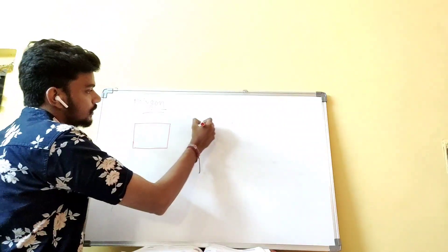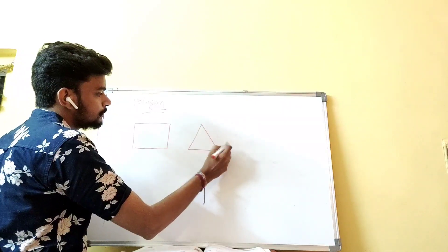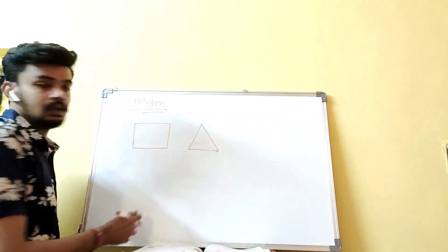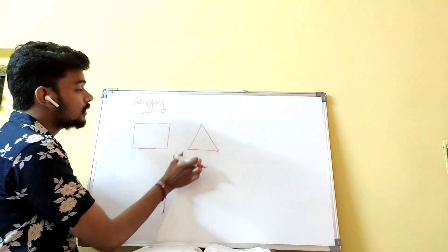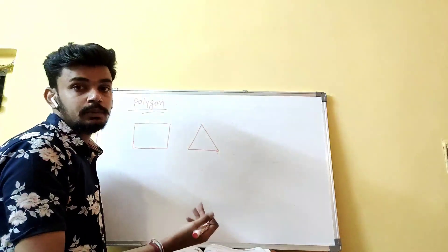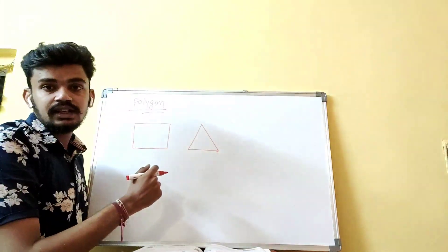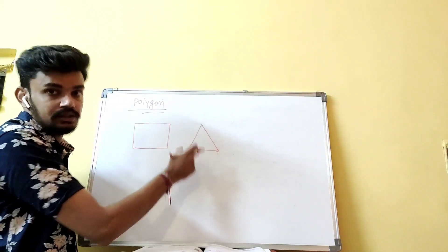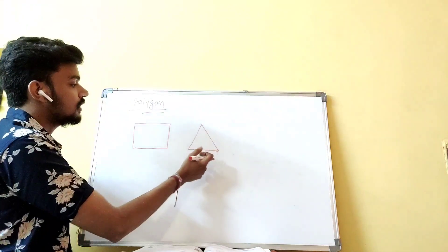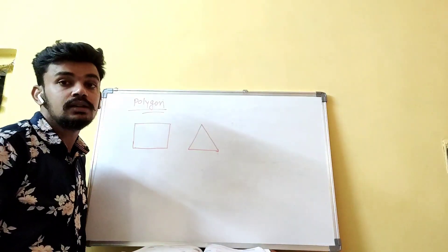Let's take one more example — the triangle. As you can see, the triangle is formed by 3 sides, and all the sides are straight. It is a closed figure. So the triangle is also included in the polygon.